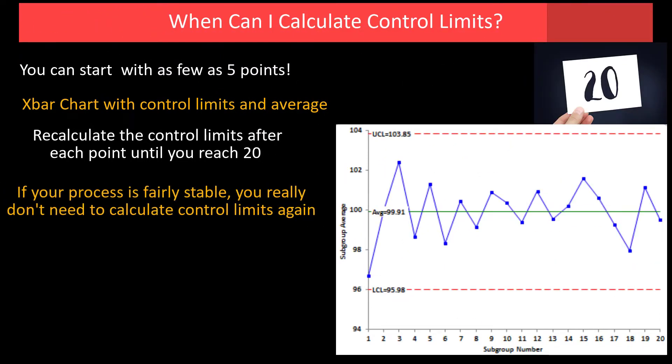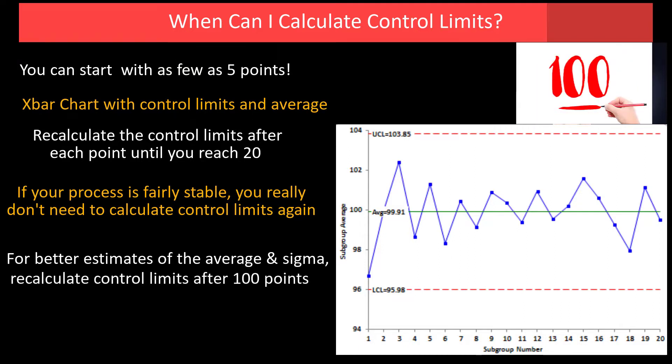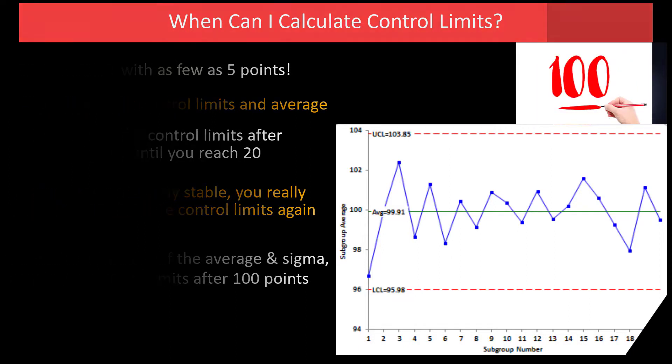So here we have 20 points. And if your process is fairly stable, you really don't need to calculate control limits again. You can do it for better estimates of the average and sigma by recalculating control limits after 100 points.